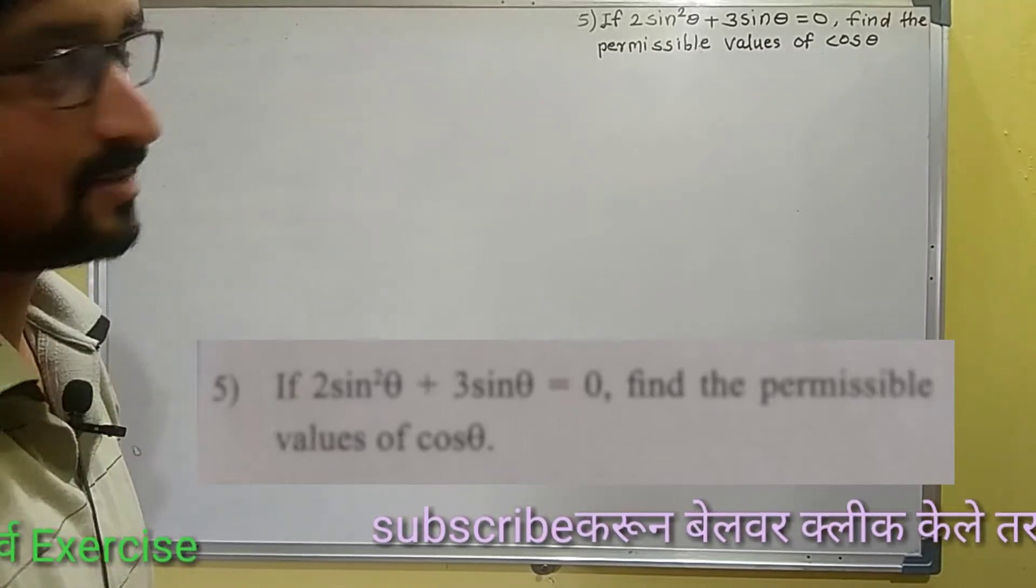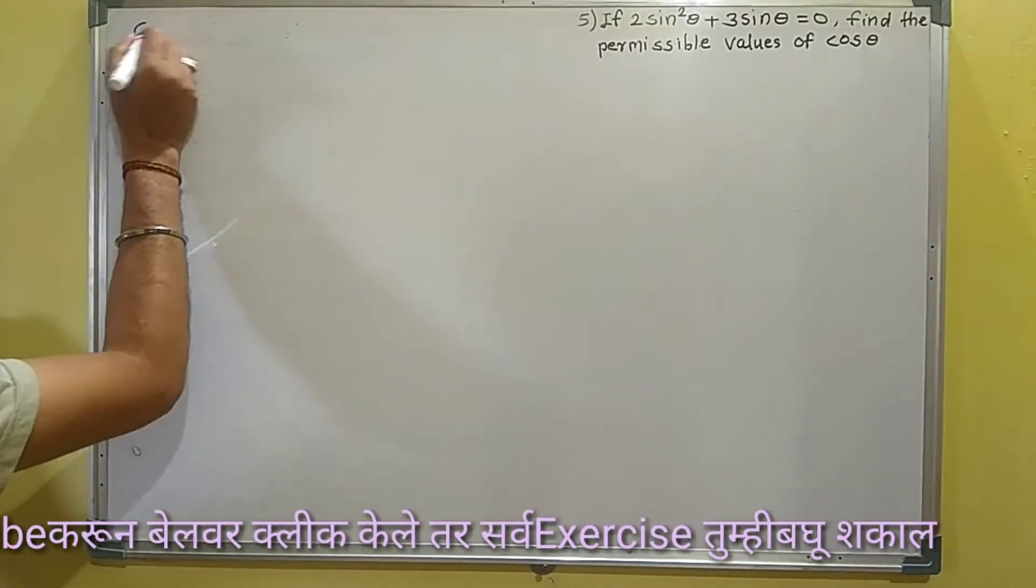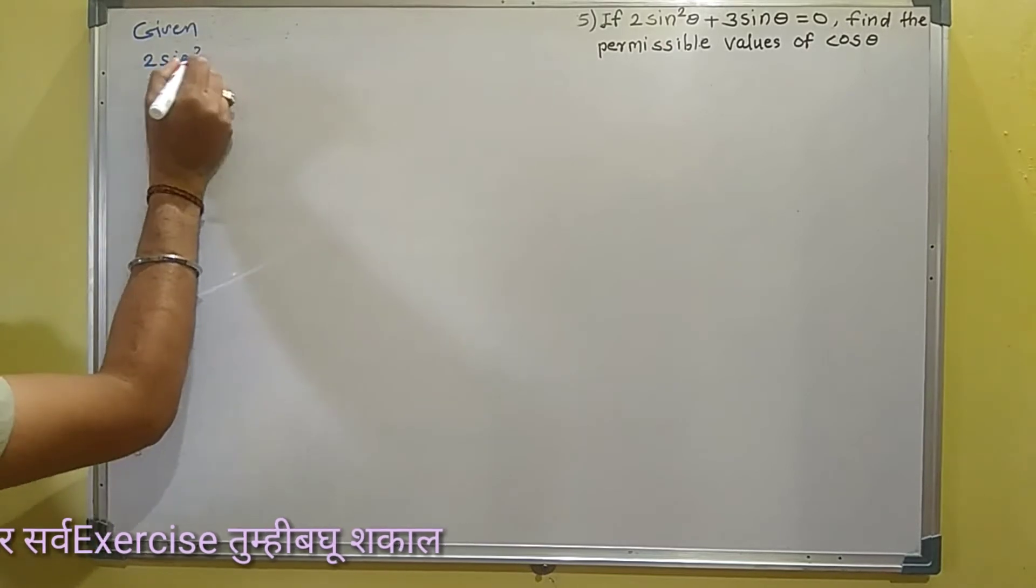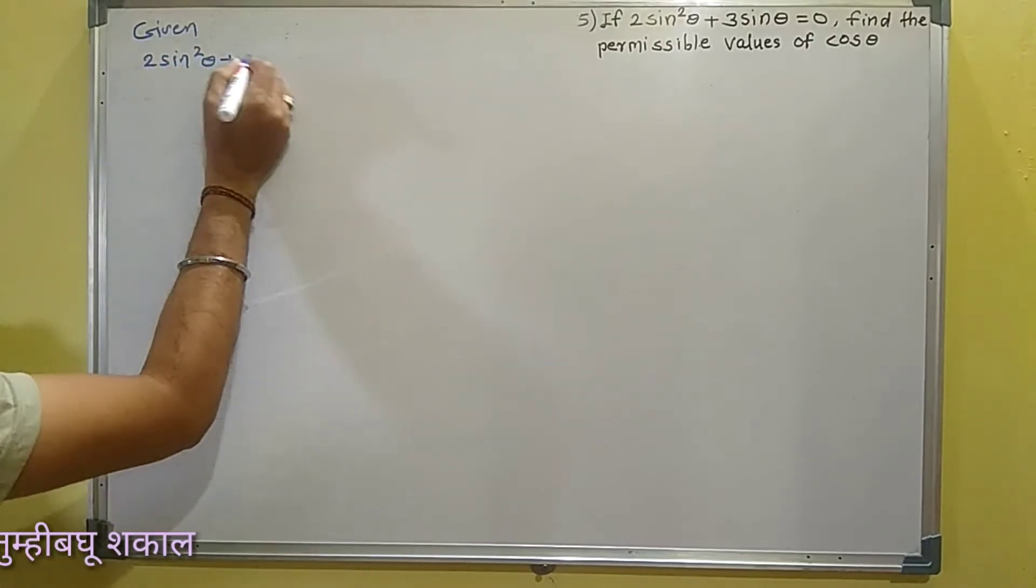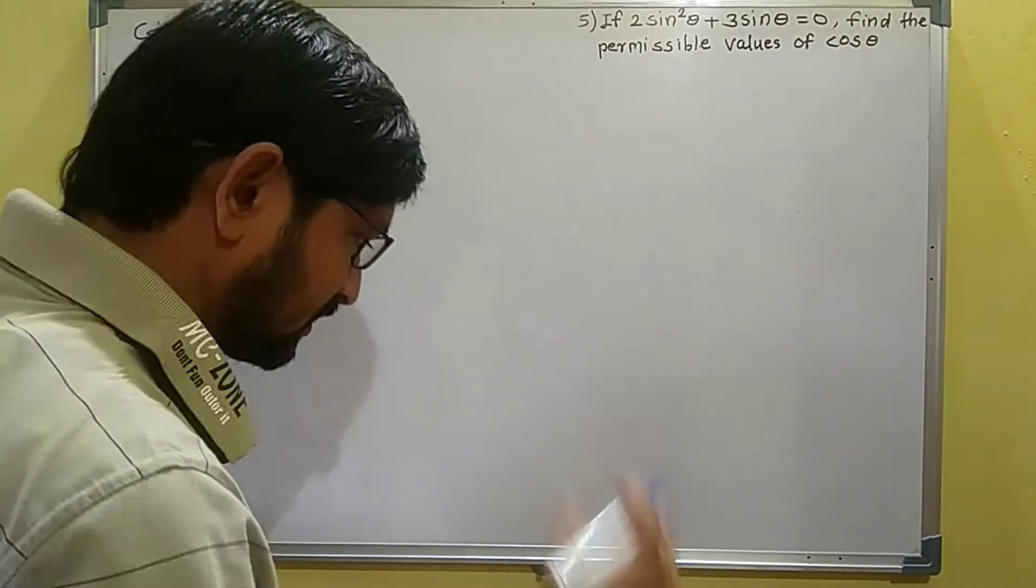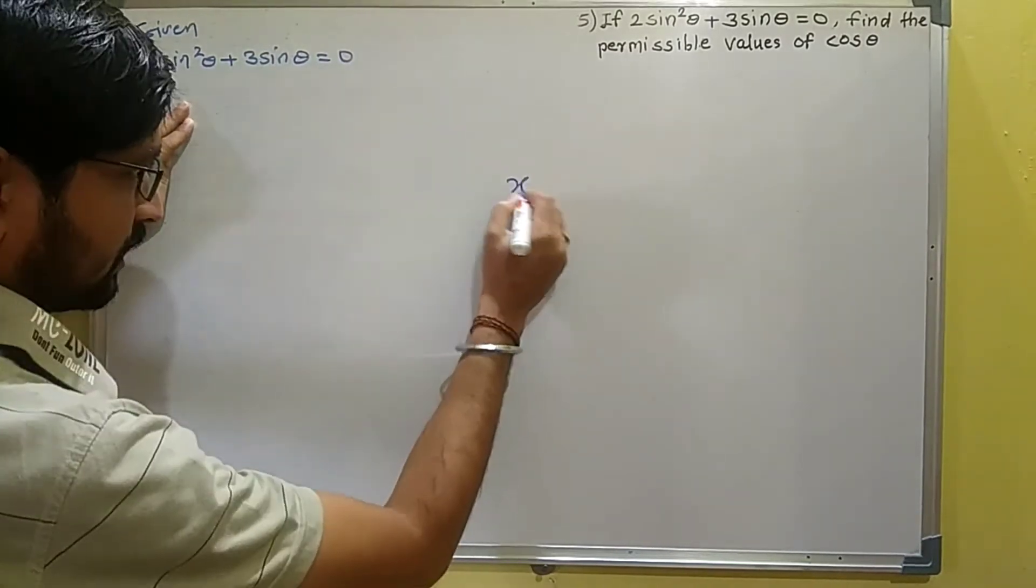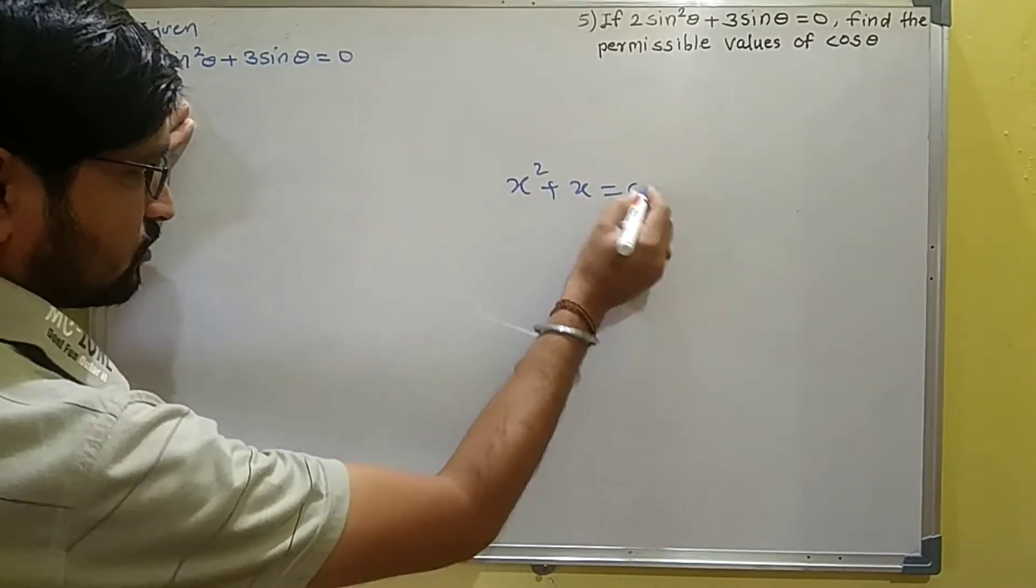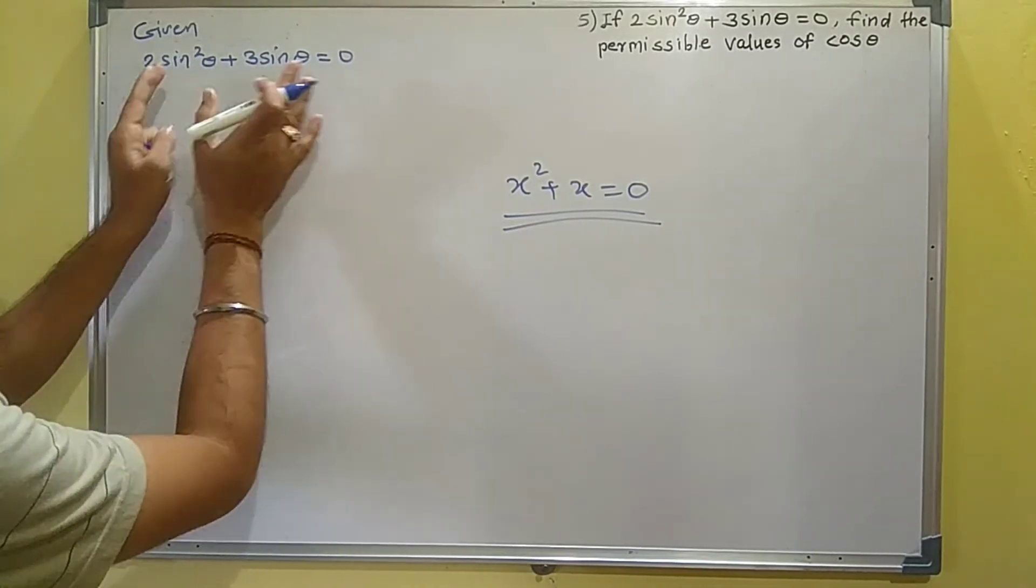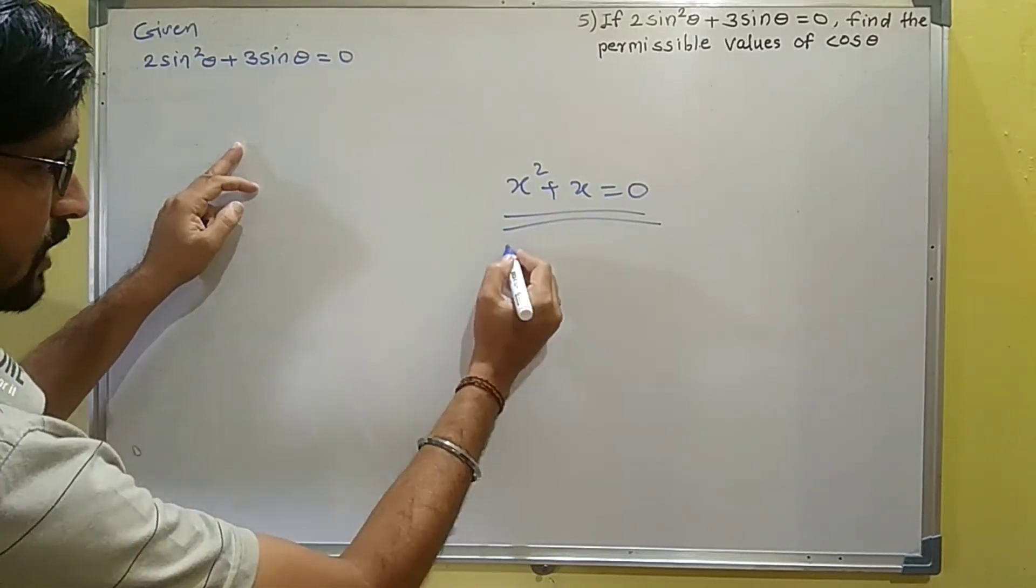See what is given: 2sin²θ + 3sinθ = 0. This resembles the form x² + x = 0, which is a quadratic equation. Here sin²θ and sinθ are the terms, so we can treat sinθ as the variable x.